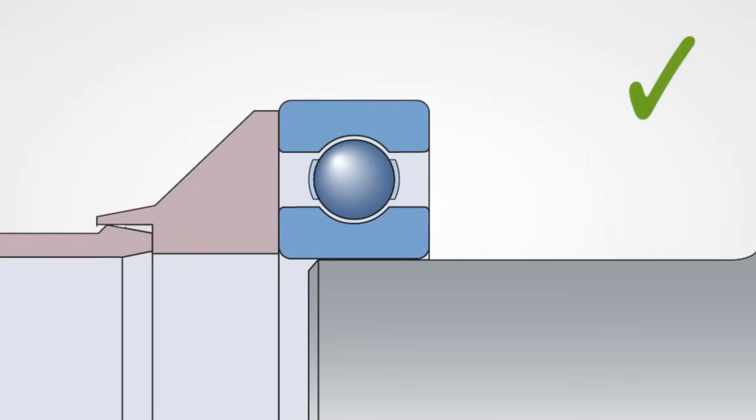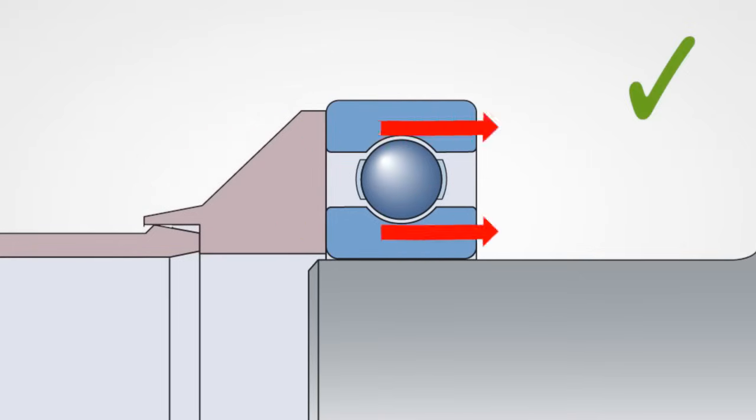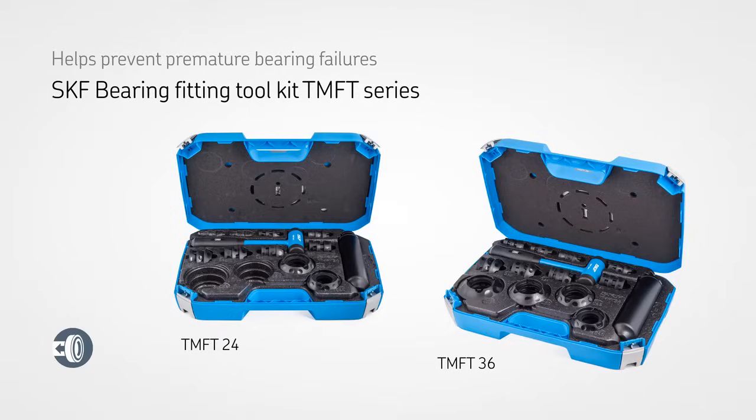Deep groove ball bearings are supplied with a range of predefined radial internal clearances. Normal clearance is not marked. Bearings with a greater than normal clearance are marked with the C3 mark. Always make sure the replacement bearing is identical and has the same internal clearance as the original.